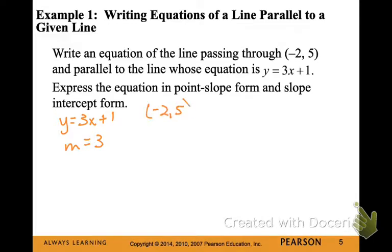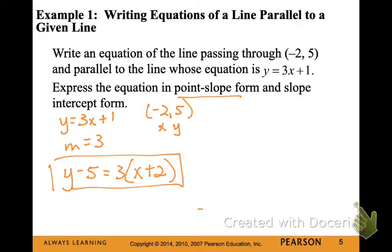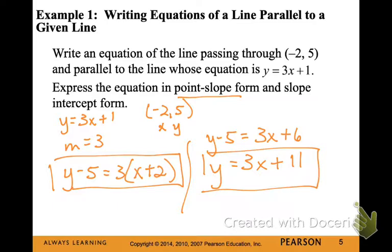So that means our line will also have a slope of 3. We know that our new line will pass through the point (-2, 5). So we can use that x and y value and the slope to write our point-slope form of the equation of this line. And now we can simplify that point-slope form to create our slope-intercept. So we distribute our 3, add the 5.